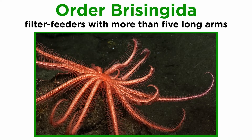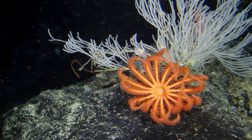Members of order Brisingida are filter feeders that generally have long arms which always number more than five, a small, brittle star-like disc, and are most common in the deep sea.